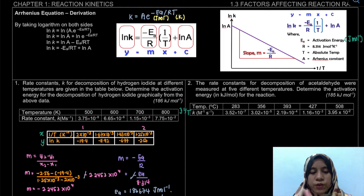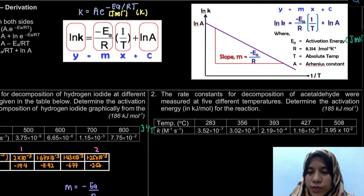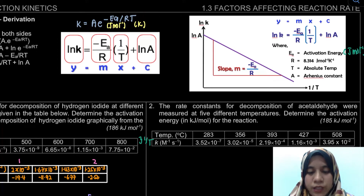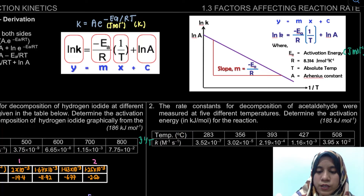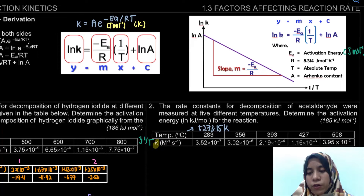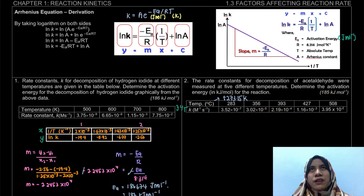For question 2, remember that temperature must be in Kelvin. If the question gives temperature in degree Celsius, add 273.15 to convert to Kelvin before plotting. If you get values like 187 or 183 kJ/mol, that's acceptable because values read from a graph have some flexibility and an allowable range.